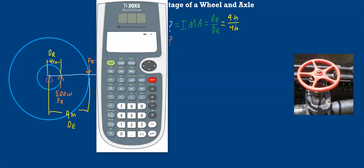And we know inches cancel out. And so if we pull out our handy-dandy calculator, we can just say 9 divided by 4. And we get an IMA of 2.25.